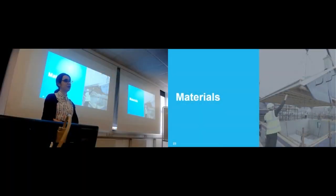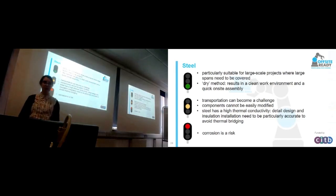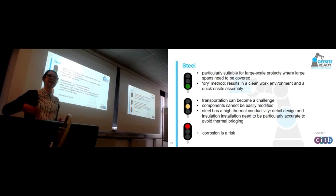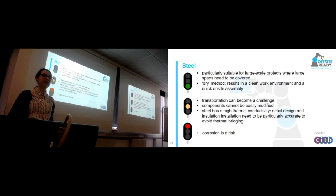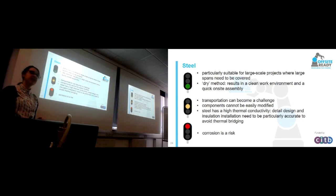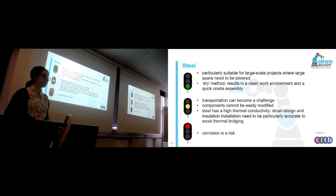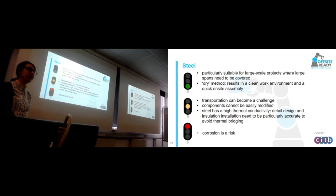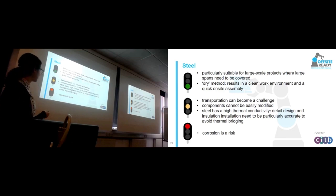Now we're going to look at what types of materials we can use for offsite construction — and to be fair, they're the typical construction materials. Starting with steel: steel is particularly suitable for large-scale projects where large spans need to be covered, where something like timber would give you limiting conditions. It's a dry method, resulting in a very clean working environment. Transportation can however be a challenge if you have very long components because of legislation. The components cannot be easily modified on site because of the material properties. And of course if you're near the sea, you have a risk of corrosion.